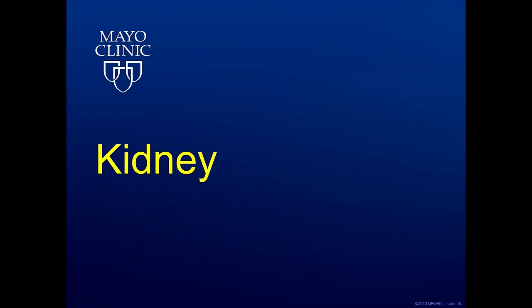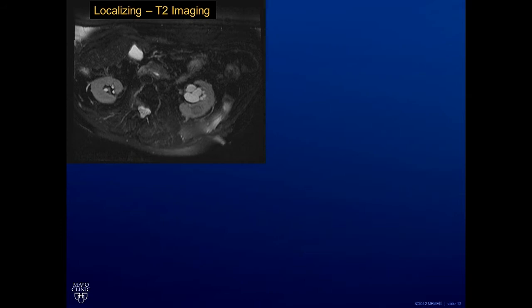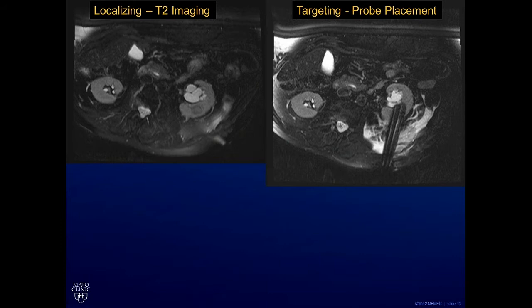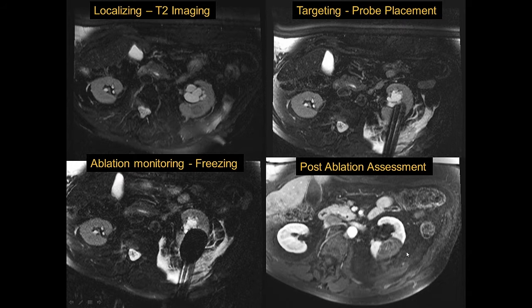Starting with the kidney, cryoablation has been a mainstay in the kidney for many years now. Here we have a kidney lesion which we targeted with two cryoneedles. We then freeze, and as you can see, it is easy to see the edge of the ice especially as it relates back to the original tumor. When we finish freezing, we can give contrast and see exactly where the margins of dead and live tissue are, making it easy to be confident that we achieved a nice ablation and a good result for the patient.